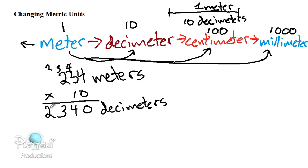If you'll notice, all we had to do is add a zero to meters to get to decimeters. So we're going to use that as a shortcut to convert 234 meters to centimeters.